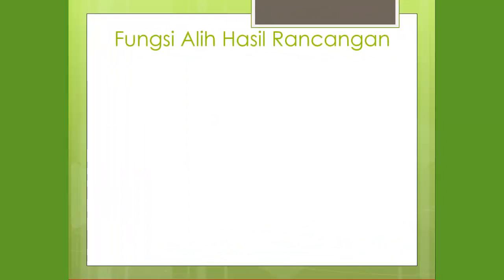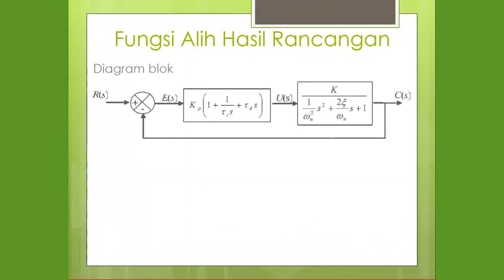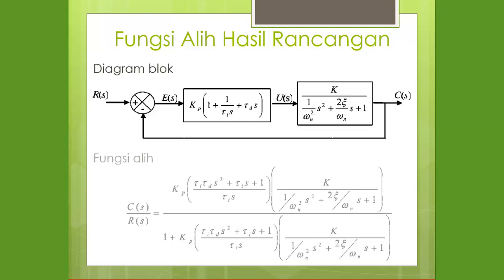Fungsi alih hasil rancangan: diagram bloknya adalah blok controller PID dihubungkan dengan blok sistem order kedua. Dibuat close-loop transfer function, maka akan menjadi fungsi alih berupa persamaan sebagaimana yang tersedia di slide.